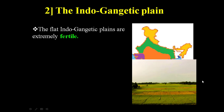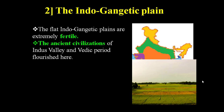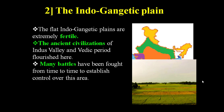The second important physical feature of India is the Indo-Gangetic Plain. These flat plains are extremely fertile lands where the ancient civilizations of the Indus Valley and Vedic period flourished. In the next lesson you will get more information about the Indus Valley, Harappa, and Mohenjo-daro civilizations, as well as the Vedic period. Many battles were fought over time to establish control over this fertile area.